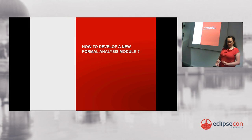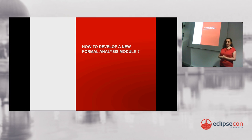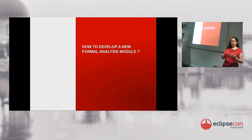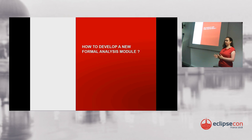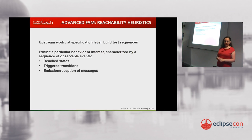Now I'll show how to develop a new formal analysis module from what we've seen. We need a pre-process, post-process, and filter. I've chosen to illustrate this with an example — reachability heuristics called hit-or-jump.